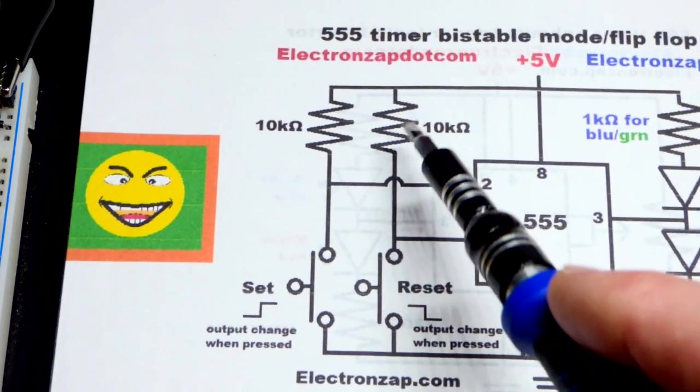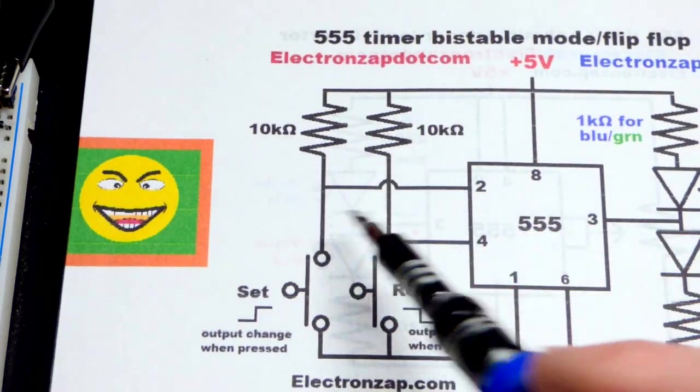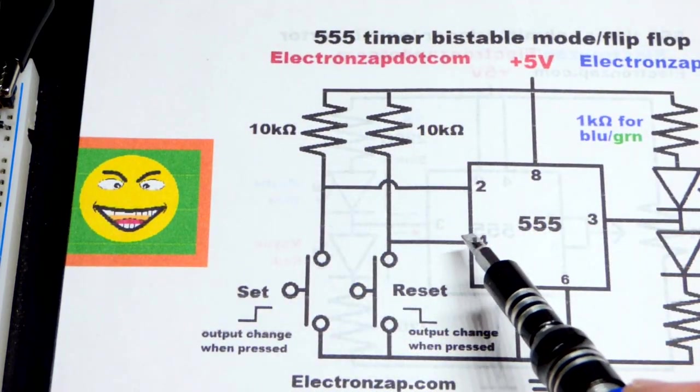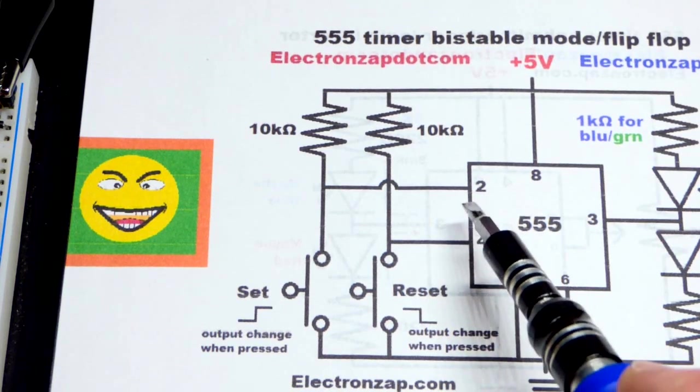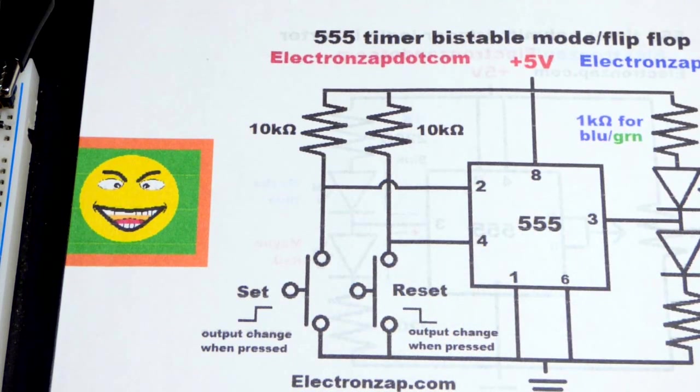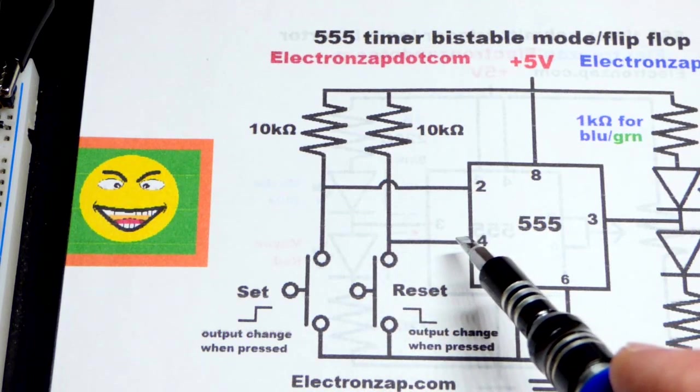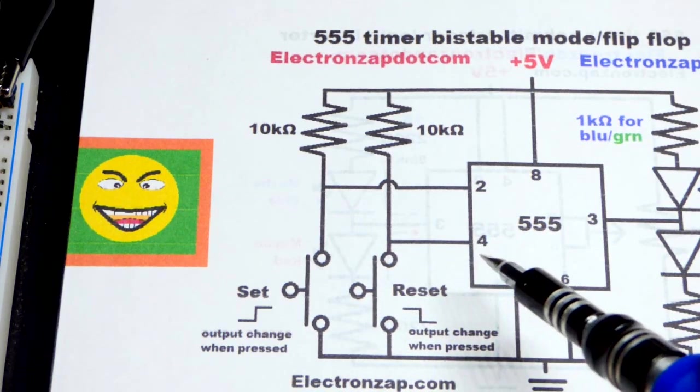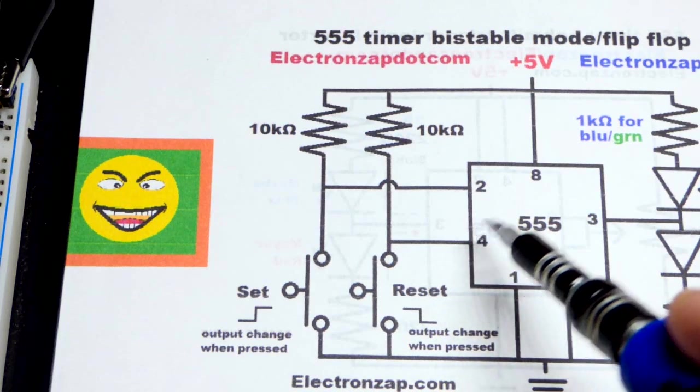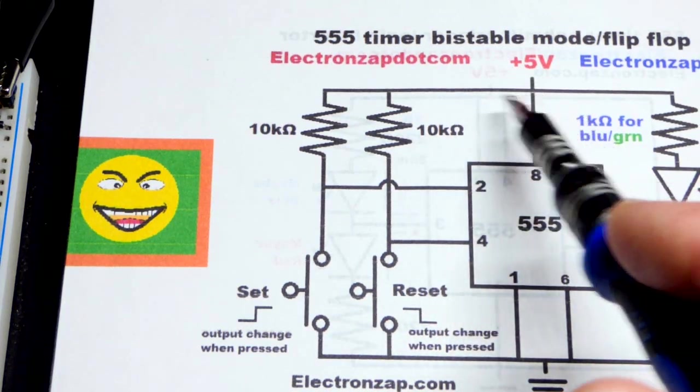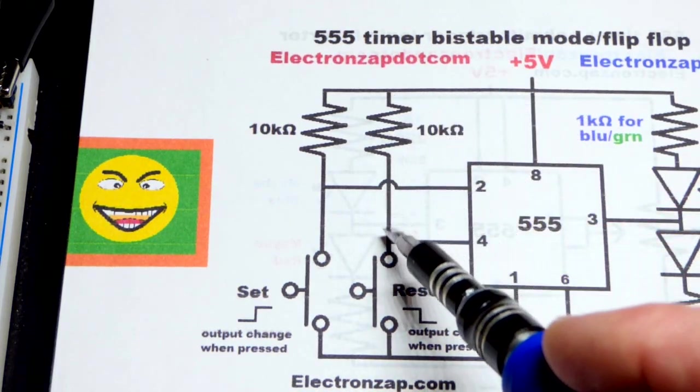We also have these resistors up here because the pins for them kind of pick up stray signals in the air. If nothing's making contact it makes a wavering voltage, what's called floating. We can just take a high value resistor, 10 kilo ohm right there.